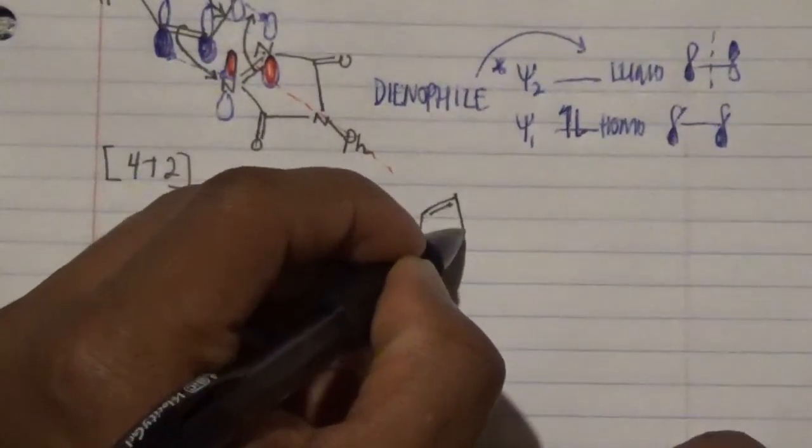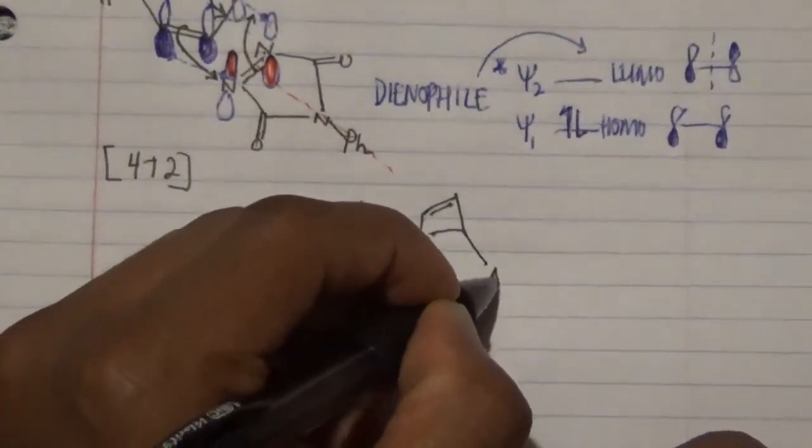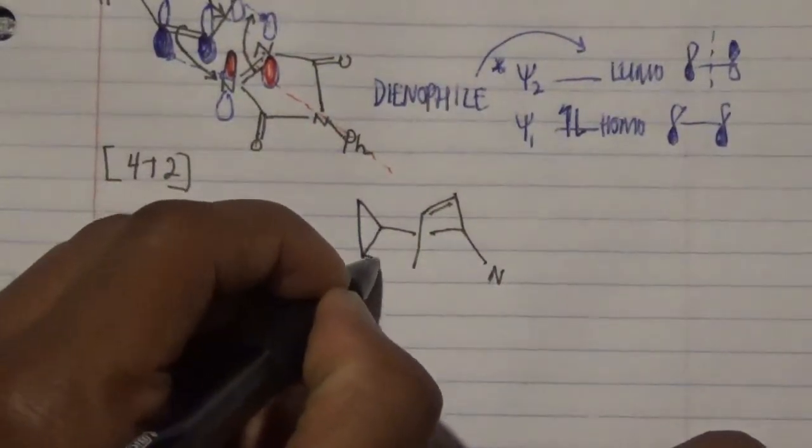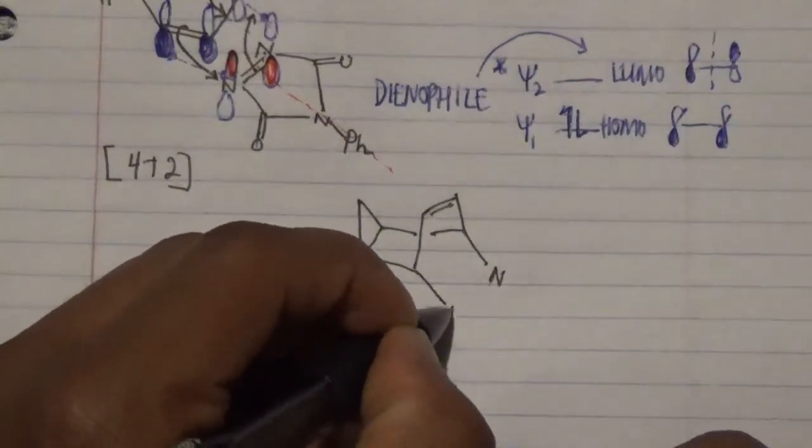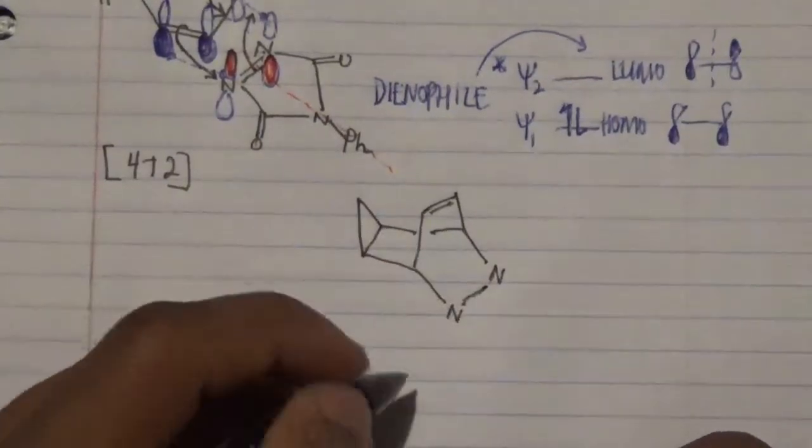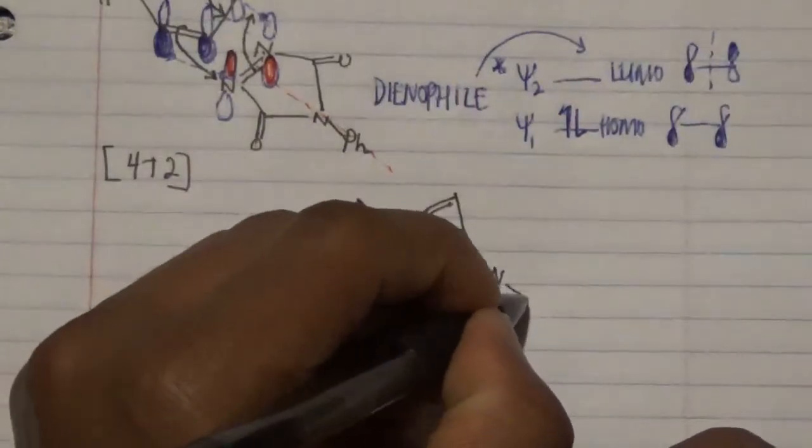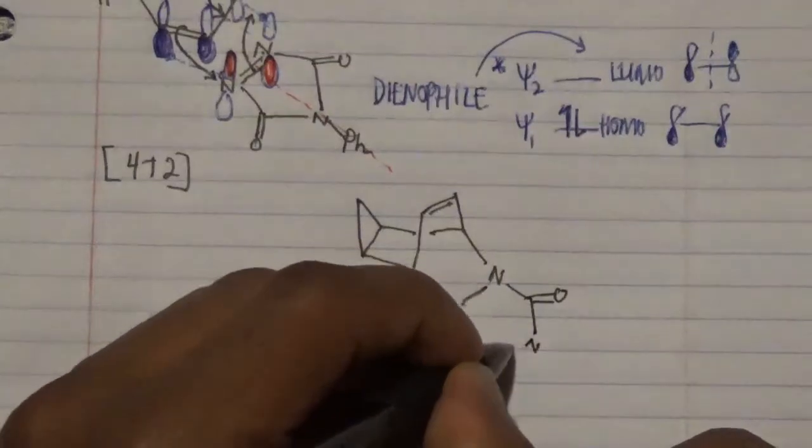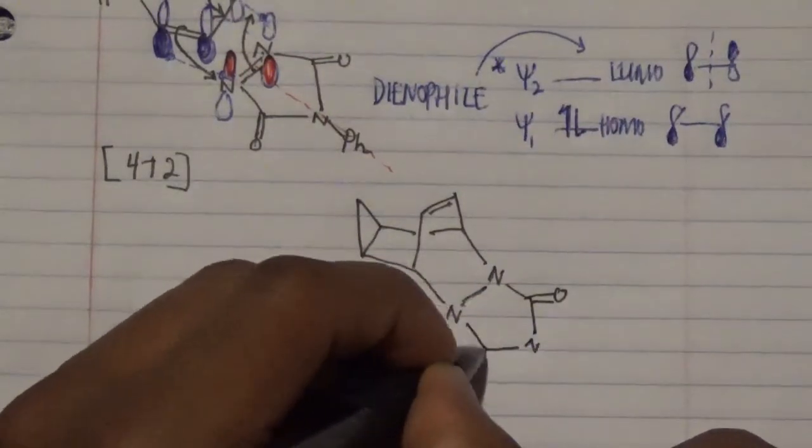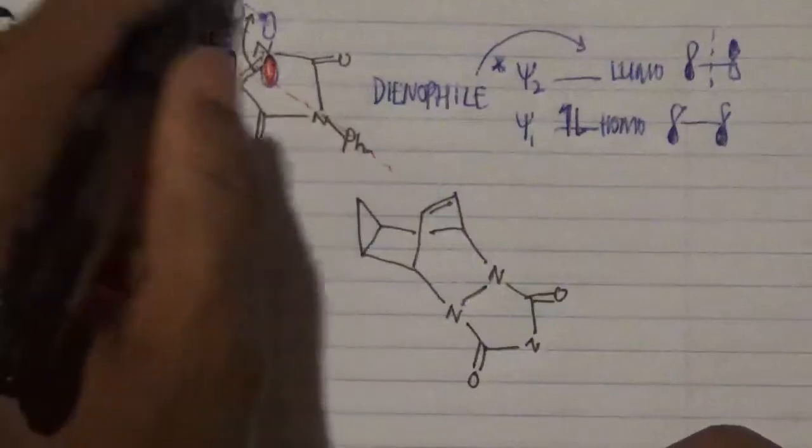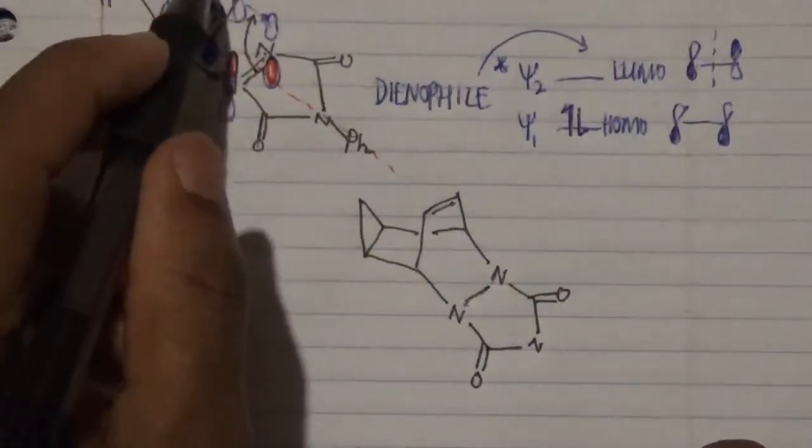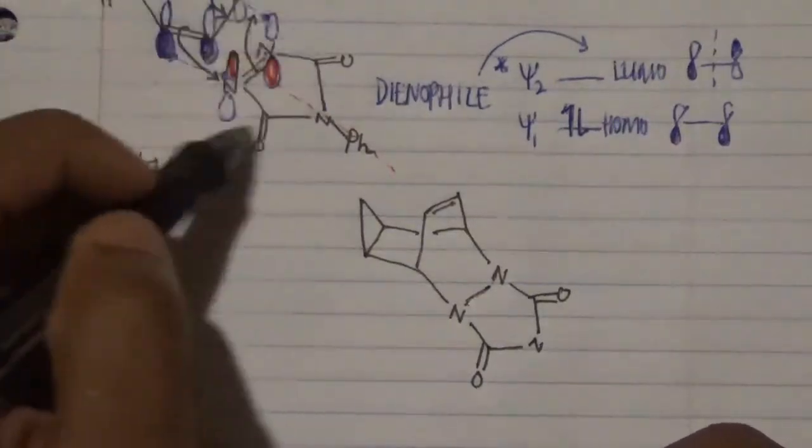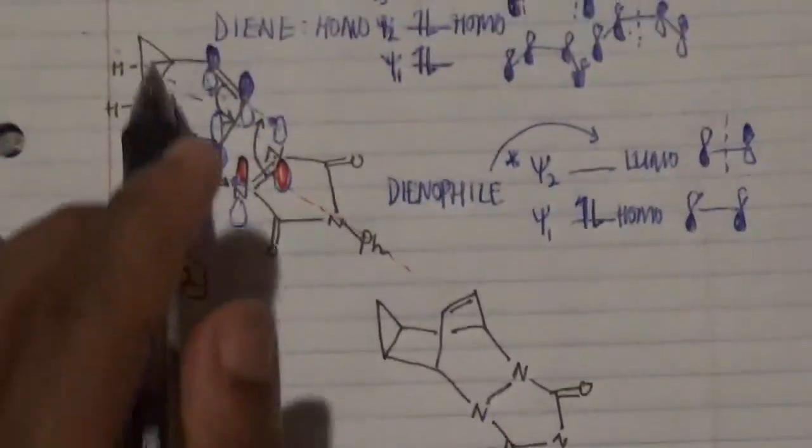Therefore, what the result is the formation of our product, which is this particular compound over there. Sorry, my drawing is bad, but I have no excuse because we are chemists. Chemists will try to make things beautiful. So here you have it.